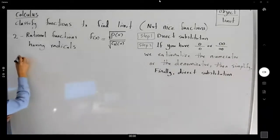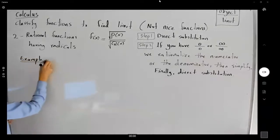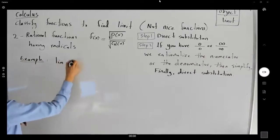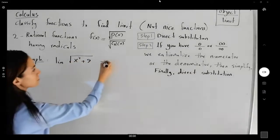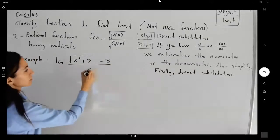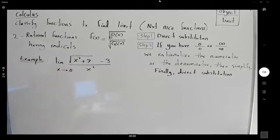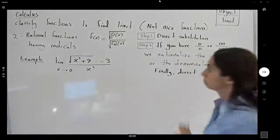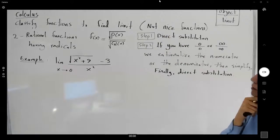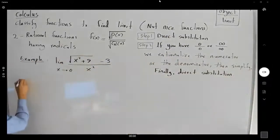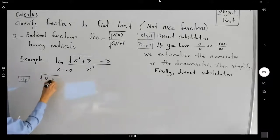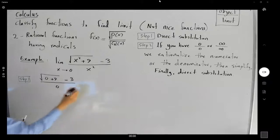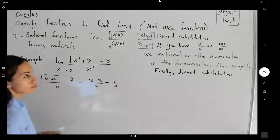One example: find the limit of (√(x² + 9) − 3) divided by x² as x approaches 0. Let's follow the steps. Step one, direct substitution: if I plug in 0, I get √(0 + 9) − 3 divided by 0², which gives 3 − 3 over 0, or 0 over 0 — indeterminate form.